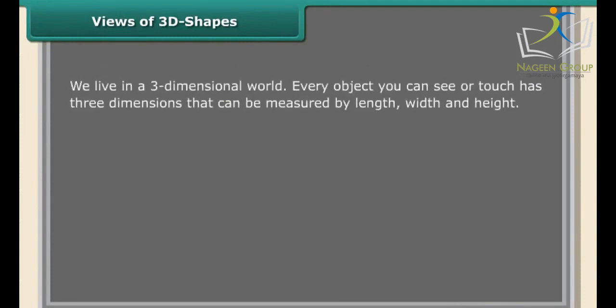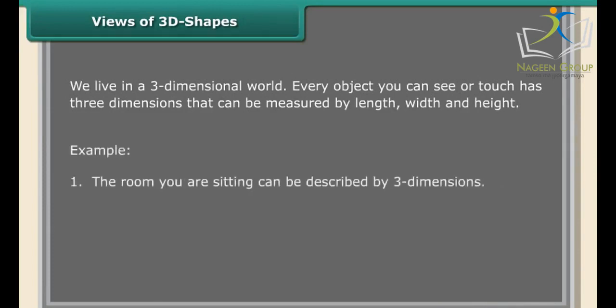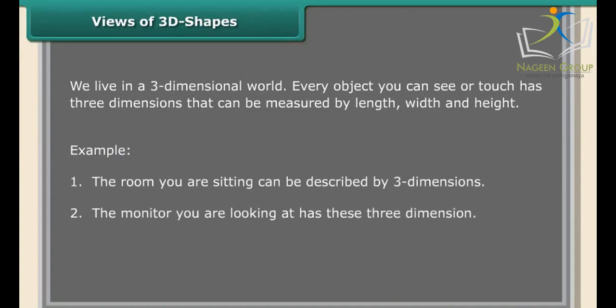We live in a three-dimensional world. Every object you can see or touch has three dimensions that can be measured by length, width, and height. For example, the room you are sitting in can be described by three dimensions, and the monitor you are looking at also has three dimensions.